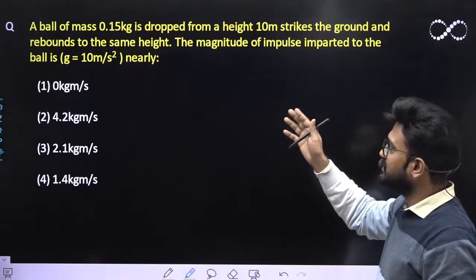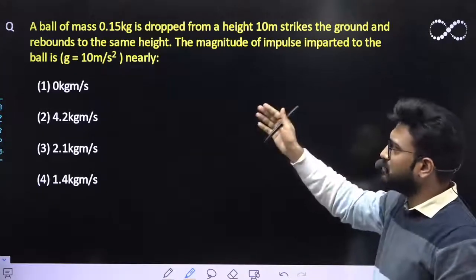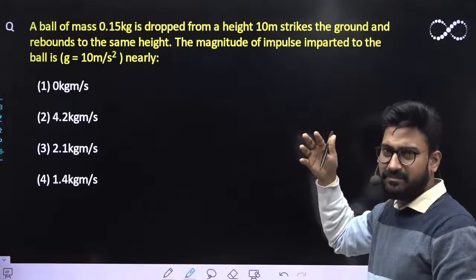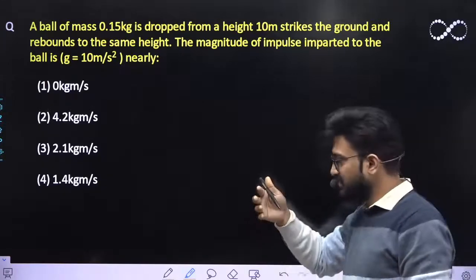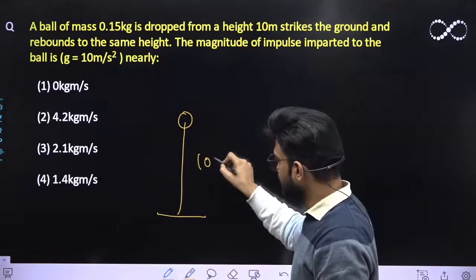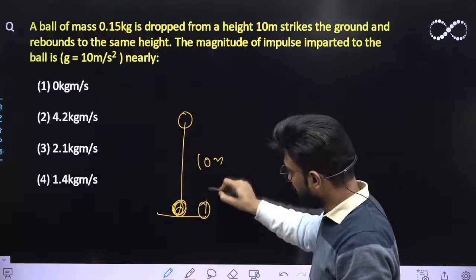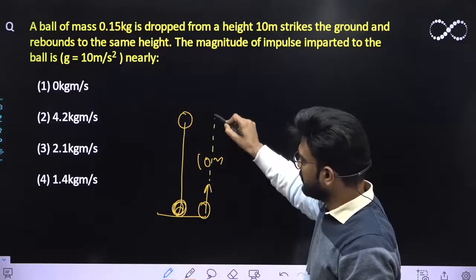Question says: A ball of mass 0.15 kg is dropped from a height of 10 meters, strikes the ground, and rebounds to the same height. So that means it must be an elastic collision, don't you think so? The ball is dropped from the height of 10 meters and it hits the ground, and again it rebounds and goes to the same height.